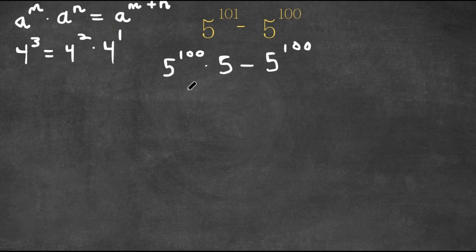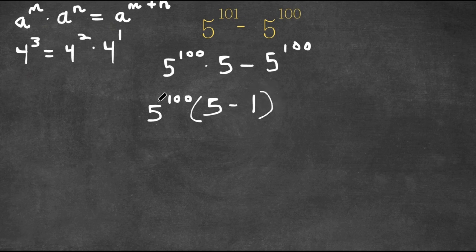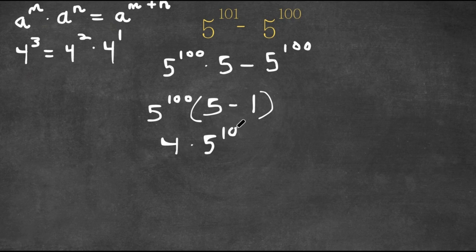Now that both of these terms have 5 to the power of 100 in them, I'm going to factor out 5 to the power of 100. So now we have 5 to the power of 100 times 5, divided by 5 to the power of 100, which is simply just 5. Minus 5 to the power of 100 divided by 5 to the power of 100, which is 1. So we have 5 to the power of 100 times (5 minus 1), and 5 minus 1 is simply 4. So now we have 4 times 5 to the power of 100.